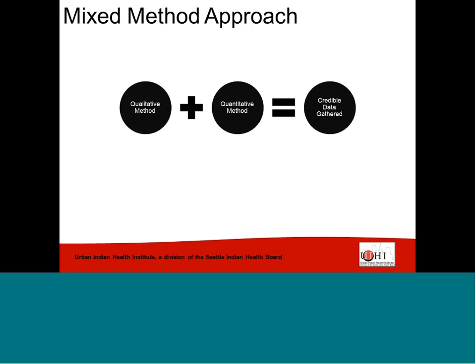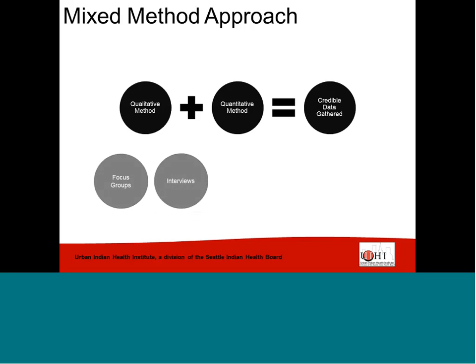A mixed method approach can include two or more qualitative or quantitative methods. For example, if we want to learn about barriers that limit clients from accessing substance abuse treatment, we could hold focus groups with staff and conduct interviews with clients. Together, these two qualitative methods would gather valuable information from different viewpoints that can help identify possible solutions to overcome client barriers. Likewise, if we want to assess whether implementation plans to improve client access to substance abuse treatment services are being followed as planned, we could use a combination of quantitative methods such as document reviews and surveys.